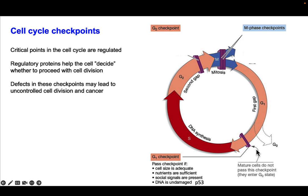The first checkpoint happens late in G1. The cell determines whether cell size is adequate, nutrients are sufficient, social signals are present, and the DNA is undamaged. If the answer to all of these is yes, the cell passes the checkpoint and enters S phase. The protein that regulates the DNA damage portion of this checkpoint is called P53, which we'll get to in a moment.